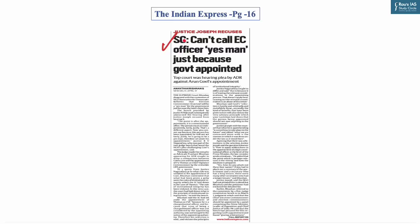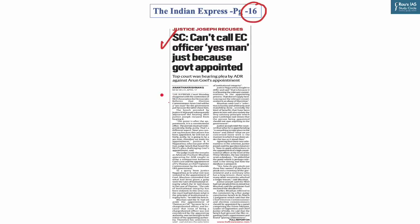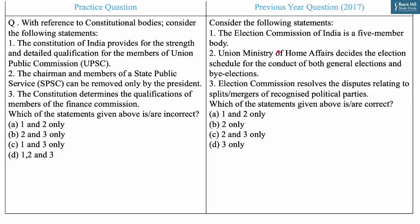The last question is based on news from page 16 of the Indian Express. The Supreme Court disagreed with the NGO Association for Democratic Reforms' contention that Election Commissioner Arun Goyal would be a yes-man for the government. The bench presided by Justice KM Joseph adjourned the hearing after Justice Joseph recused himself. Questions on important constitutional bodies like the Election Commission are a persistent UPSC theme. In 2017, UPSC asked about features of the Election Commission of India.